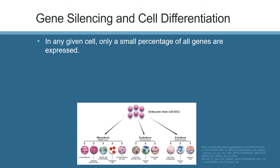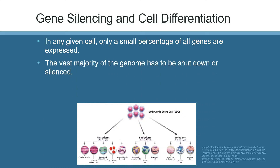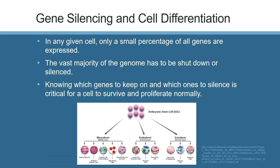In any given cell, only a small percentage of the genes are expressed. The vast majority of the genome has to be shut down or silenced in order for the cell to differentiate. Knowing which genes to keep on and which ones to silence is critical for a cell to survive and proliferate normally.